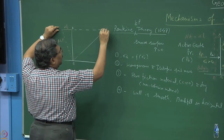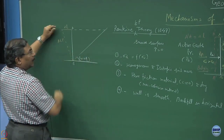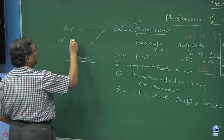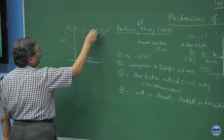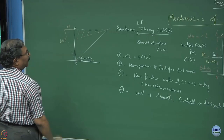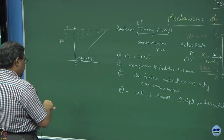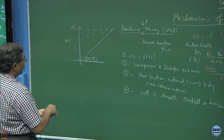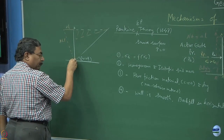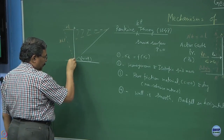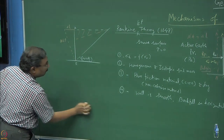In this case, the failure plane develops at an angle of 45 plus phi by 2. The soil mass has a tendency to flow out, so there will be a depression, and this volume of soil mass gets moved out and accumulates somewhere — a typical active earth pressure condition. I can also assume, rather than B, that point A acts as a hinge — mechanism number 3.